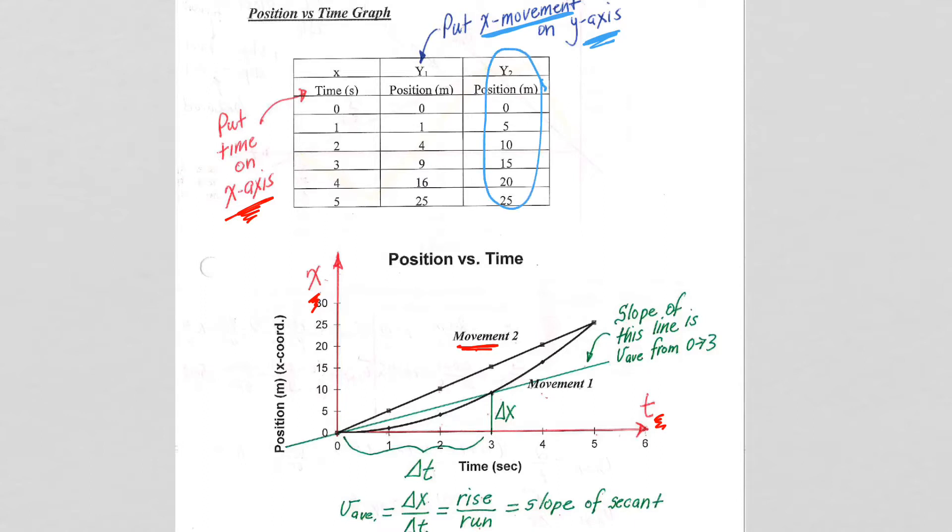We're looking here at movement 2. At time t equals 0, we're at position 0. One second later, position plus 5. One second later, position plus 10, and so on.